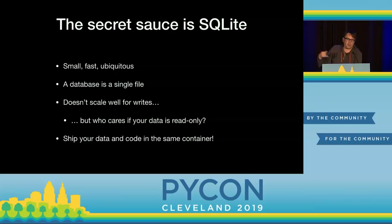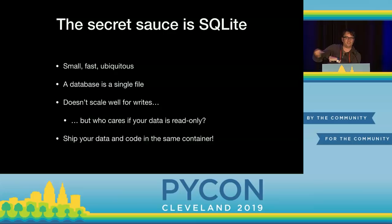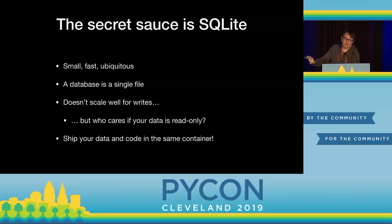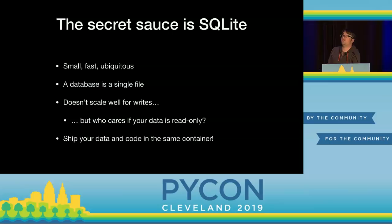SQLite is this amazing little public domain licensed database — absolutely tiny, an embedded library which everyone in this room has access to because it ships as part of the Python standard library. It's ubiquitous to the point that it's in mobile phones, in desktops. My Apple Watch has a SQLite database recording my steps, which I haven't managed to get access to yet, which is really infuriating. One of the nicest characteristics of SQLite is everything is a single database file, so you can back it up by copying it. You can email them to people. It's a really nice archival format. And if our data is read-only, SQLite's one limitation — it doesn't scale well for writes — just disappears. If you want to scale to millions of hits a second, run 30 copies and load balance between them.